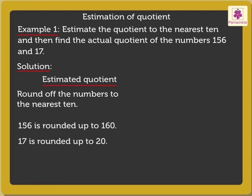Next, divide the numbers obtained. Thus, the estimated quotient is equal to 160 divided by 20, which is equal to 8.